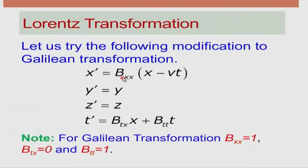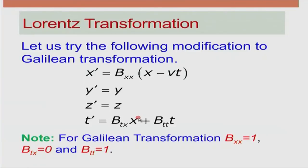I have introduced three constants: bxx, which multiplies (x minus vt); and constants btt and btx in the equation for t prime. If bxx were equal to 1, then x prime would equal x minus vt, which is the Galilean transformation. If btx were 0 and btt were 1, the t prime equation would also reduce to the Galilean form. I am not giving arguments for why these equations take this form; if interested, you can look into the Resnick book.